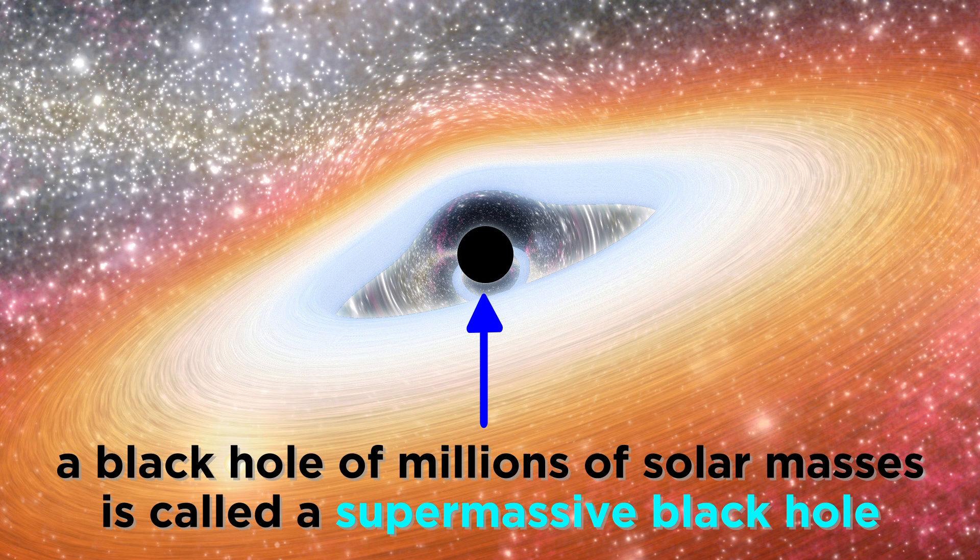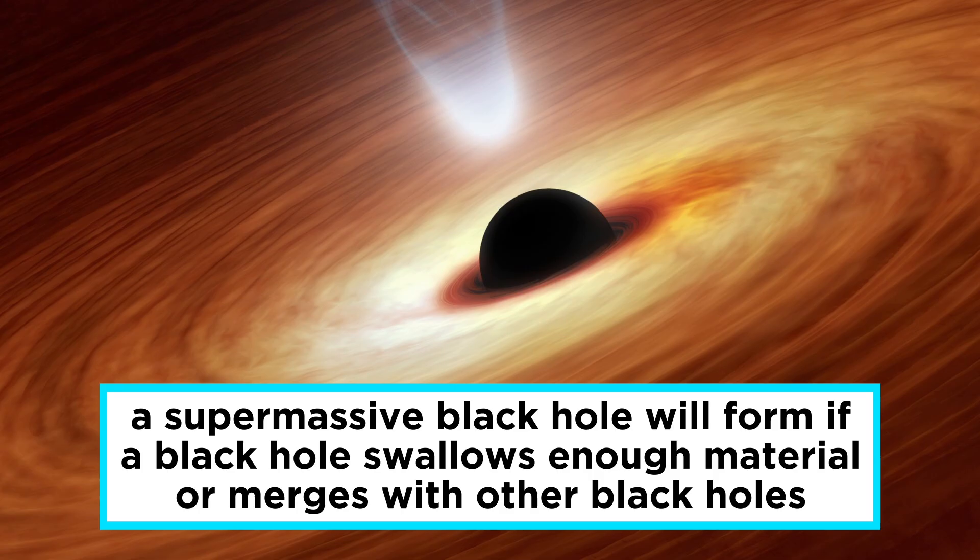Sometimes it will have a mass equal to many millions of solar masses, and we call this a supermassive black hole. These can form over billions of years if black holes swallow up enough material from their surroundings, or even merge with other black holes.